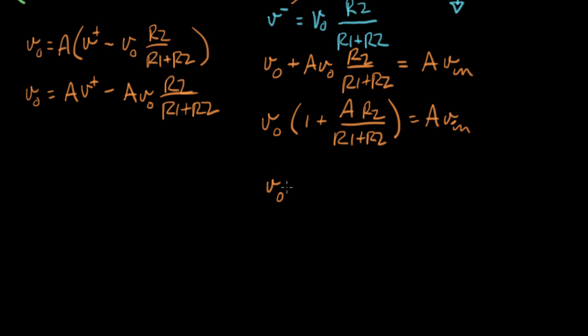Let's make some more room. I can do that. I can say V out equals A V in divided by this big expression, one plus A R2 over R1 plus R2. All right, so that's our answer. That's the answer. That's V out equals some function of V in.